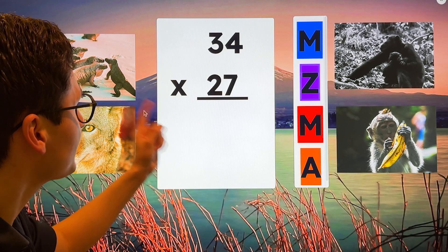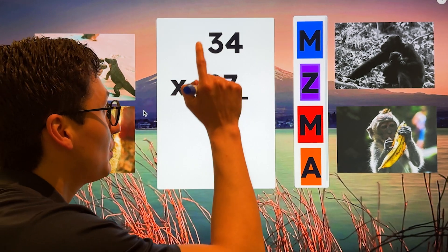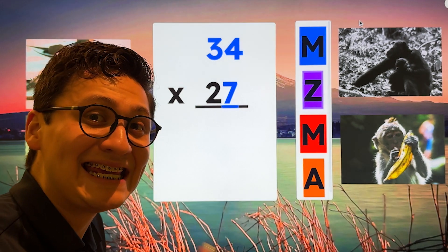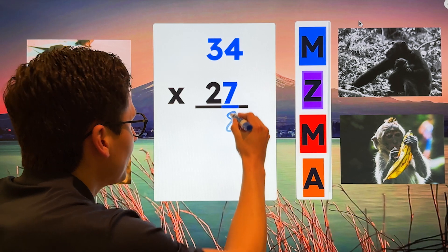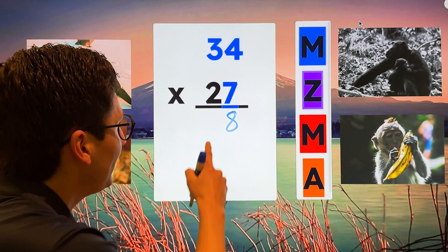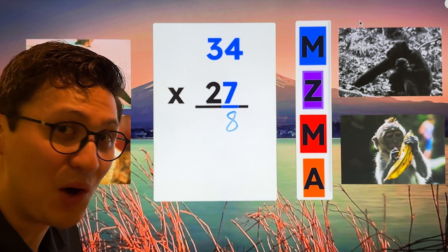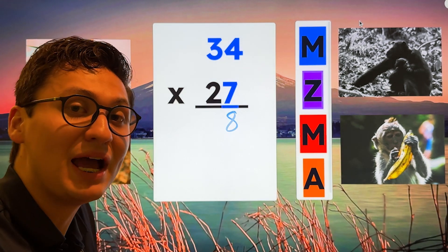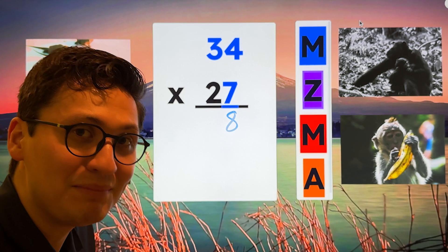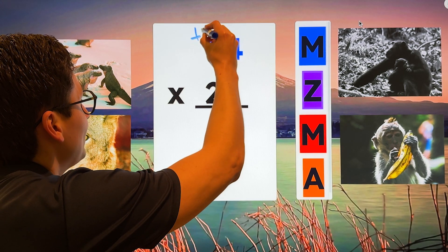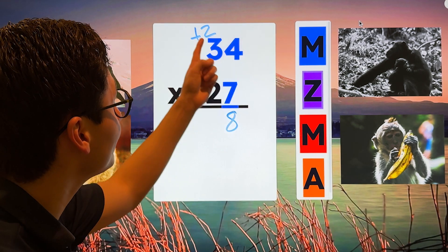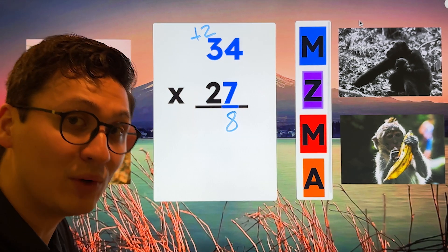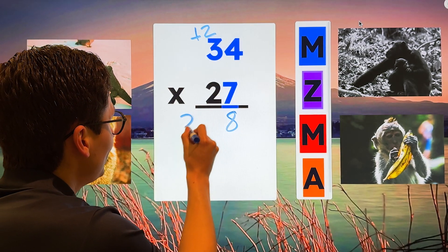Now we have 34 times 27, and we go back to our step number one, which is multiply. So seven times four is 28. The eight goes at the bottom. But what about the two? You have to regroup the two. All that it means is that you have to put the two up here. So seven times four is 28. And now we're going to do seven times three is 21 plus two is 23.